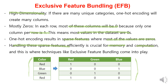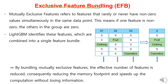Exclusive Feature Bundling in LightGBM is a technique that groups features by leveraging the concept of mutually exclusive features. Mutually exclusive features are features that rarely or never have non-zero values simultaneously in the same data point — if one feature is non-zero, the others in the group are zero. For example, if a product belongs to the fruit category, it cannot belong to the clothing or cosmetics categories. Thus, fruit, clothing, and cosmetics are mutually exclusive categories. By bundling mutually exclusive features, the effective number of features is reduced, consequently reducing the memory footprint and speeding up computation without losing information.